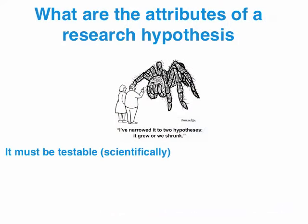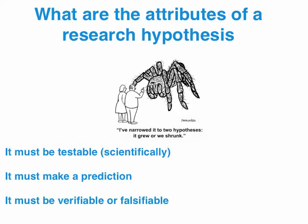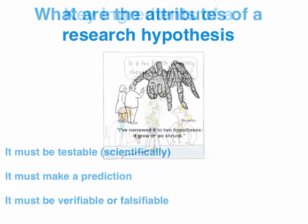The attributes of a hypothesis: it's got to be testable. Statements such as 'a blue sky is beautiful,' 'Katy Perry is a great singer,' 'Roger Federer has a majestic forehand' — these are statements that aren't testable, not scientifically anyway. So we can't convert them into a hypothesis. We've got to make a prediction, and our prediction must be verifiable or falsifiable in the event of an insignificant result where we have a p-value over 0.05.